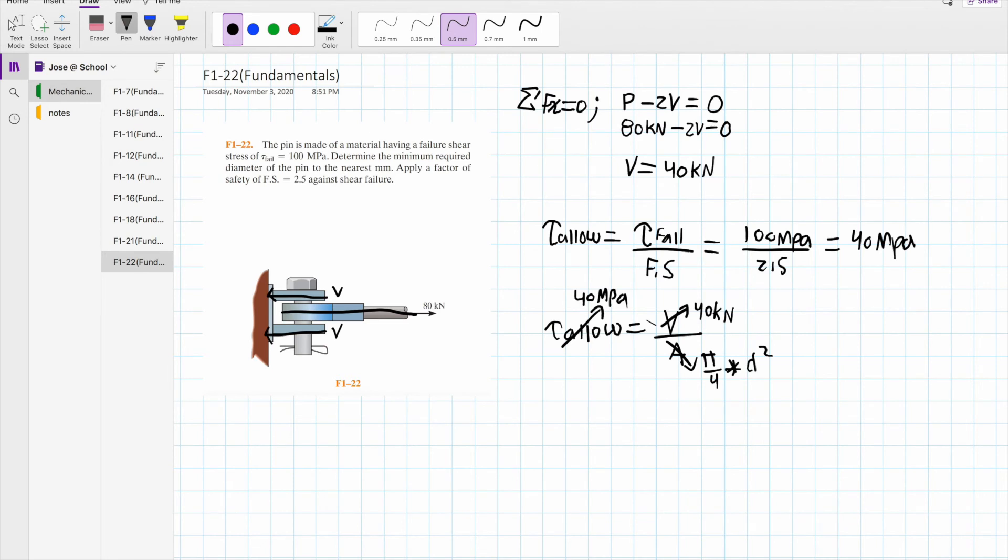For unit homogeneity we convert everything to Pascal. 40 MPa to Pascal is simply 40 times 10 to the 6 Pascal equals 40 kN which is 40 times 10 to the 3 Newton. And we divide it by the area which is simply pi over 4 times the diameter squared.